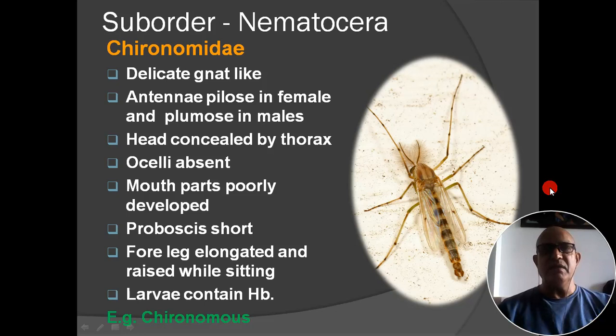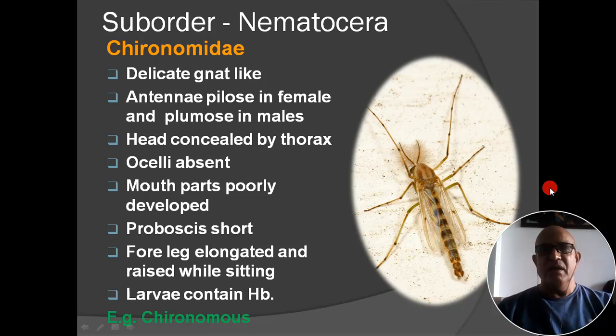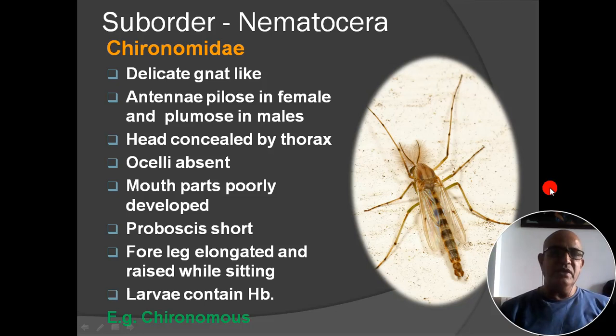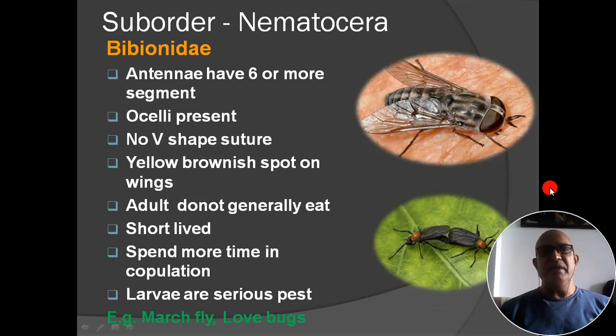Next family: Chironomidae. Body is delicate and net-like. Antenna: pilose in female, plumose in male. Head concealed by thorax; ocelli absent; mouthparts poorly developed; proboscis short; legs are long. Larvae contain hemoglobin. Main example: Chironomus. In MSc studies, the giant chromosomes from Chironomus larvae are generally used to prepare slides.